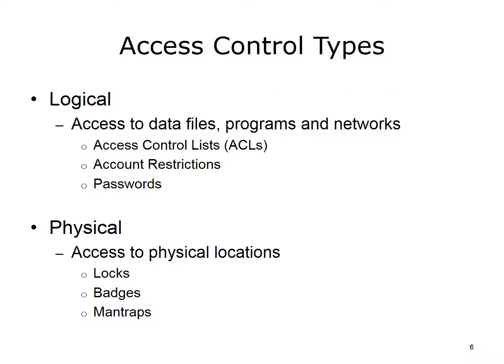There are two types of access control: logical and physical. Logical access control is managing access to data files, programs, and networks. Methods for controlling logical access include access control lists, ACLs, account restrictions, and authentication methods. Physical access control is managing who has access to physical locations. Methods include locks, ID badges, and mantraps. Mantraps will be explained later in the unit.